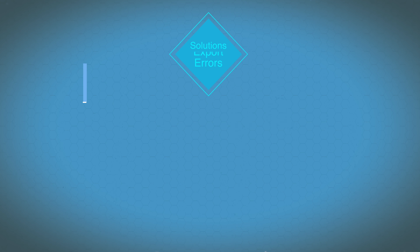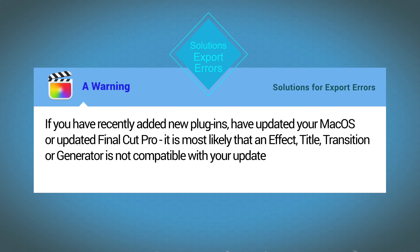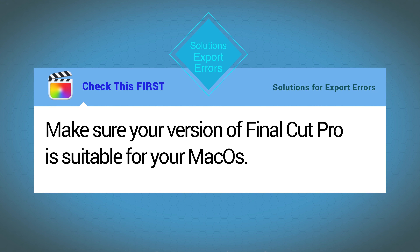The most likely cause is a plug-in conflict. If you've recently added new plug-ins, or you've updated Final Cut Pro or your Mac OS, it's most likely that an Effect, a Title, a Transition, or a Generator is not compatible with your update. This would be particularly true for anyone that's just bought an Apple Silicon M1 Mac. Make sure the version of Final Cut Pro is suitable for the version of your Mac OS.